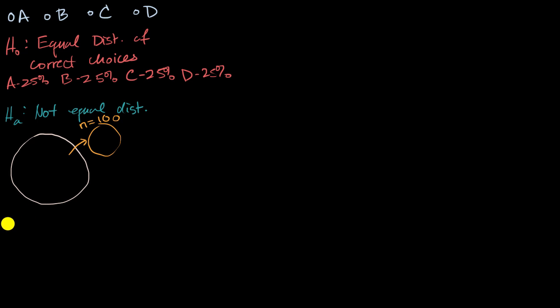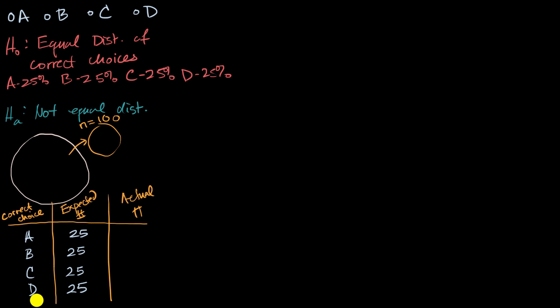And let's write down the data that we get when we look at that sample. So this is the correct choice. And then this would be the expected number that you would expect. And then this is the actual number. So there's four different choices: A, B, C, D. In a sample of 100, remember in any hypothesis test, we start assuming that the null hypothesis is true. So the expected number where A is the correct choice would be 25% of this 100. So you'd expect 25 times the A to be the correct choice, 25 times B to be the correct choice, 25 times C to be the correct choice, and 25 times D to be the correct choice.